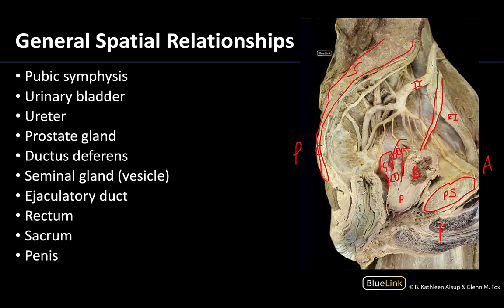Lastly, you can see just a little bit of the rectum here — the majority has been removed in this dissection — but as always the rectum is more posteriorly placed, close to the sacrum and coccyx. It's right at the level of the pelvic diaphragm that you get the transition to the anal canal.